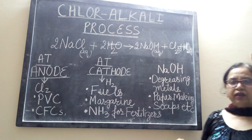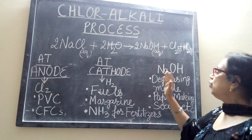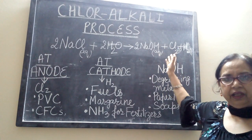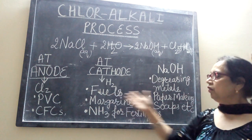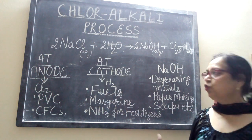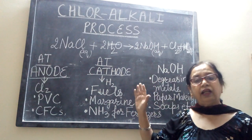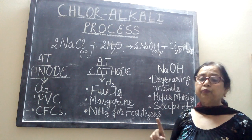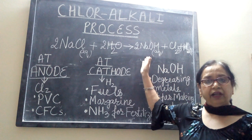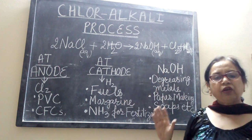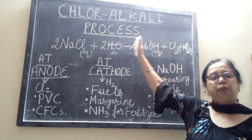Why are we doing this process and why is it called chloralkali? We do this process to obtain sodium hydroxide, chlorine, and hydrogen, which are of immense importance in various fields. It is called chloralkali because one of the products is chlorine — so 'chlor' — and the other is sodium hydroxide, which is an alkali. So we call this process of electrolysis of brine the chloralkali process.